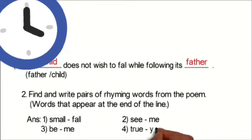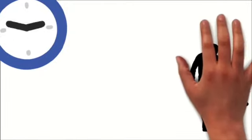Uska rhyming pair hai fall. Dusra hai see me. Tisra hai be me. Or chautha to tha, woh tha. Do you.